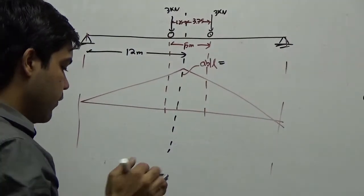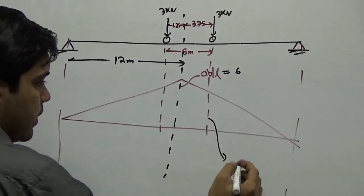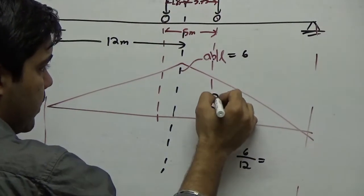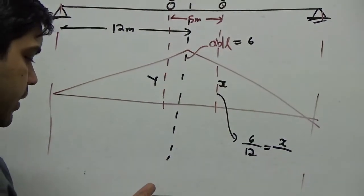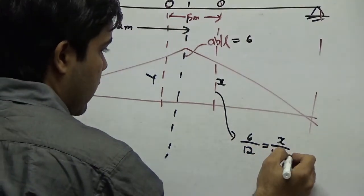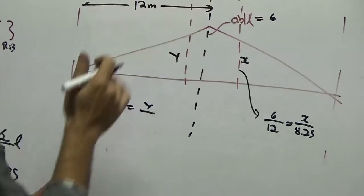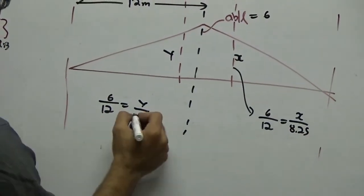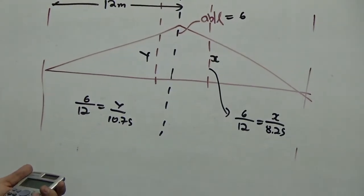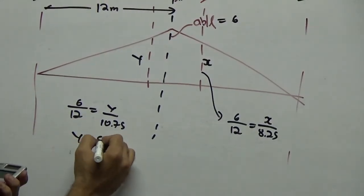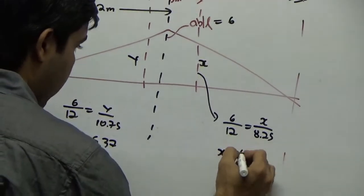By interpolation I can find the ordinates at the two wheel positions. For the first wheel: 12 minus 3.75 gives 8.25, so x equals 6 by 12 into 8.25 equals 4.125. For the second wheel: 12 minus 1.25 gives 10.75, so y equals 6 by 12 into 10.75 equals 5.375.